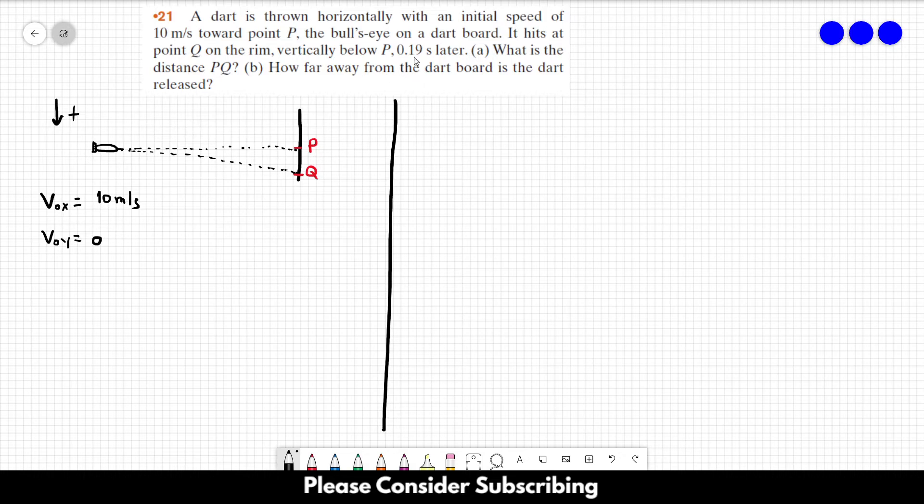And we know how long it took for the dart to reach the board. Let's remember that when the acceleration is constant, there are three different equations that we can use. They are x equals x zero plus v zero t plus a t squared over 2, or x or y. You can choose. It works for both directions. We also have v equals v zero plus a t and v squared equals v zero squared plus 2 times a delta x.